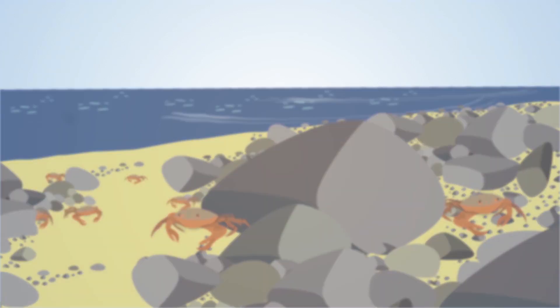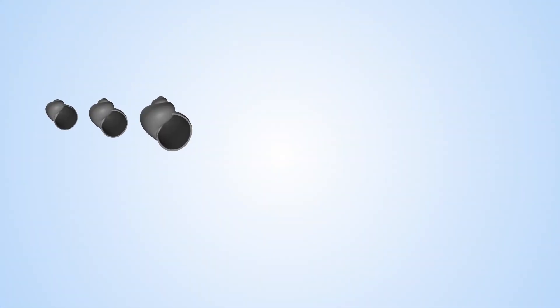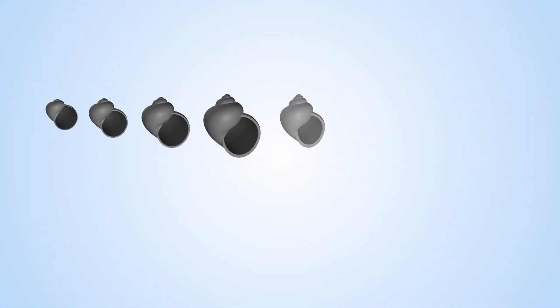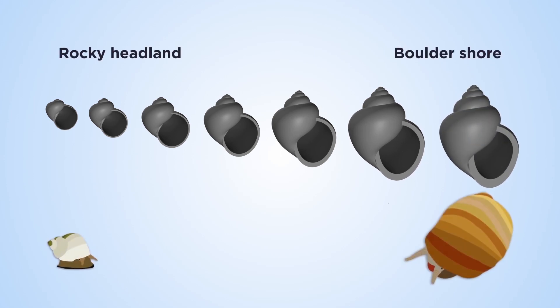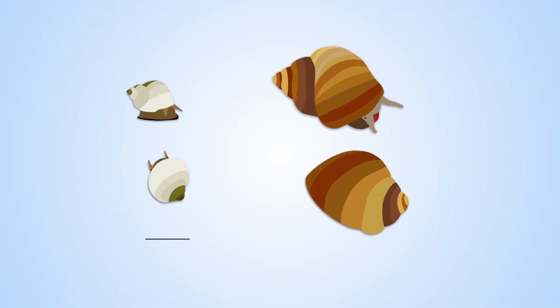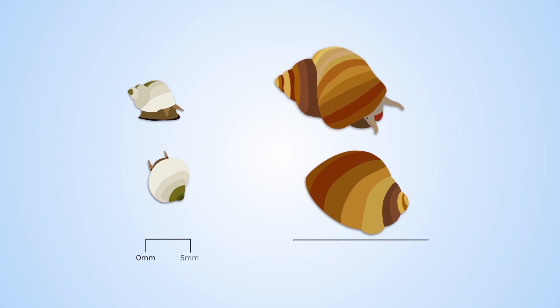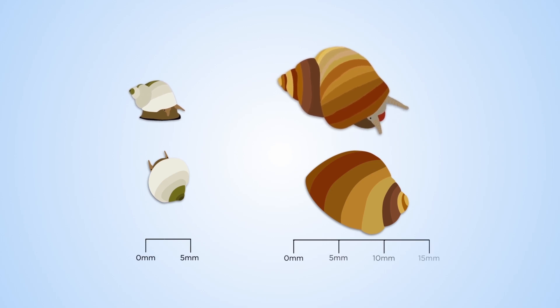Like any other species, individual rough periwinkles vary a lot. Their shells range from thin and small to thick and large. Some snails spend more time inside their shell, while others prefer to crawl on their foot and grip the rocks.